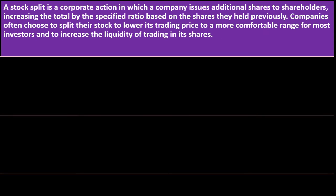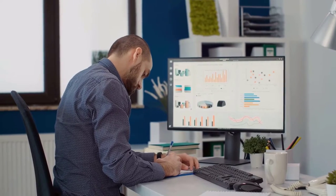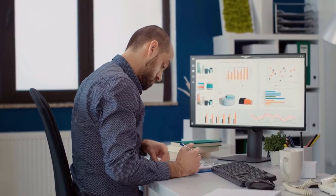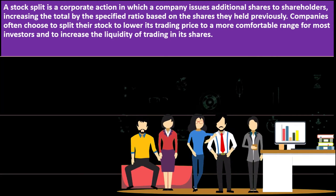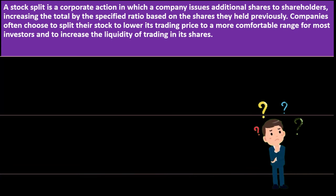A stock split is a corporate action in which a company issues additional shares to shareholders, increasing the total by a specified ratio based on shares held previously. Companies often choose to split stocks to lower the trading price to a more comfortable range for most investors and to increase the liquidity of trading. If you hold one share that doubles to two shares, theoretically there's been no real change to the underlying value — you had one share representing a bigger portion of ownership, now you have two shares representing half as much each.